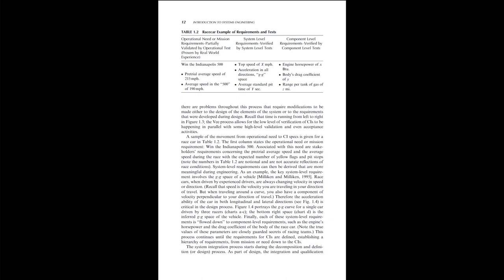The acceleration ability of the car in both longitudinal and lateral directions is critical in the design process. Figure 1.4 portrays the GG curve for a single car driven by three racers. The bottom right space chart D is the inferred GG space of the vehicle. Each of these system level requirements is flowed down to component level requirements, such as the engine's horsepower and the drag coefficient of the body of the race car. This process continues until the requirements for configuration items are defined, establishing a hierarchy of requirements from mission or need down to the configuration item.